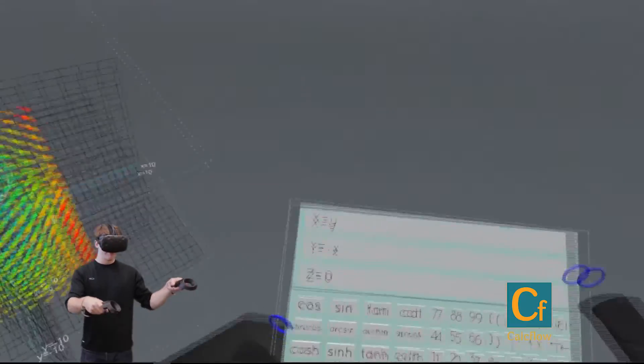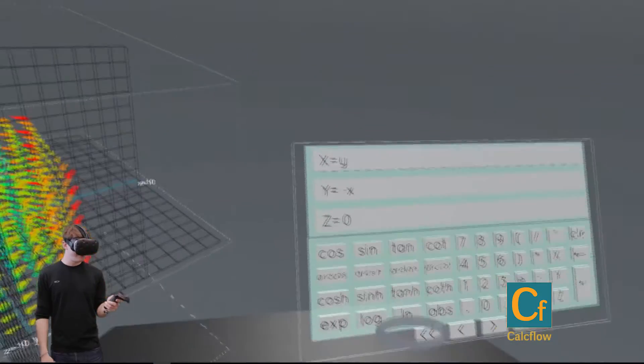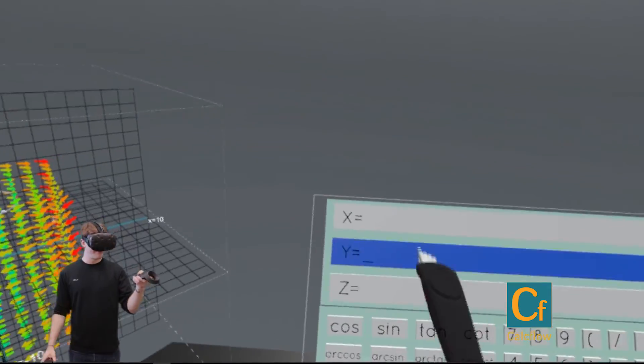And that's this function right here where we have x is equal to y, y equals negative x, and z equals zero. So let's see what we could change in here to make it a little more interesting.